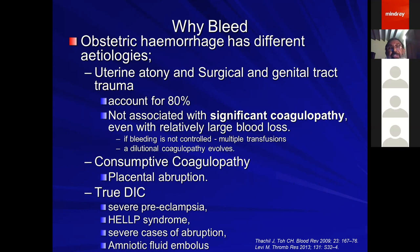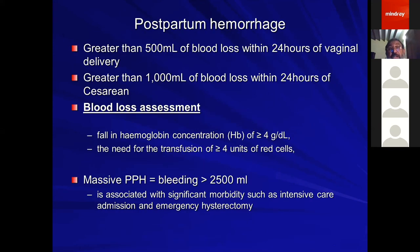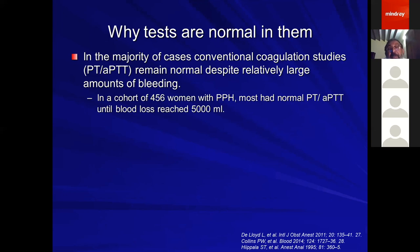Postpartum hemorrhage (PPH) is defined as blood loss of 500 ml within 24 hours of vaginal delivery or 1000 ml within 24 hours of cesarean. Blood loss assessment should be objective — a hemoglobin concentration drop of 4 g/dL can be an indicator. Massive PPH is blood loss of more than 2.5 liters.